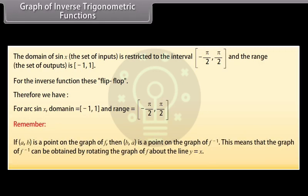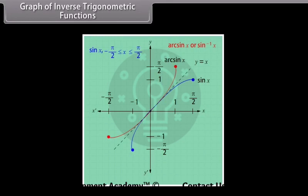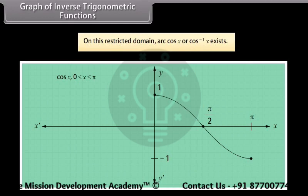The graph of f⁻¹ can be obtained by rotating the graph of f about the line y = x. The derivations of the graphs of arc cos x and arc tan x are similar to that of arc sin x. In both instances, intervals must be restricted. For arc cos x, we use the restricted piece on [0, π], and on this restricted domain, arc cos x or cos⁻¹ x exists.